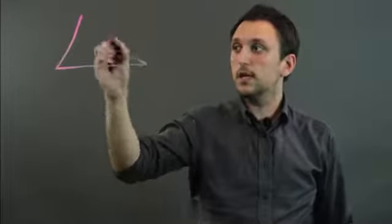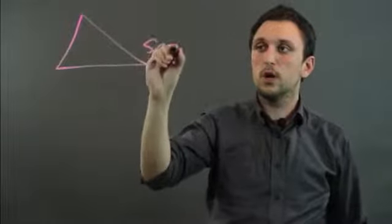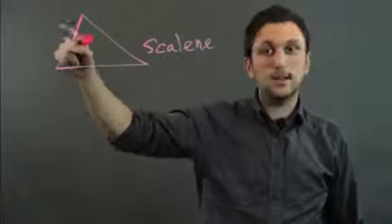But the three types of triangles are scalene, which would be no sides being equal, no sides and no angles.